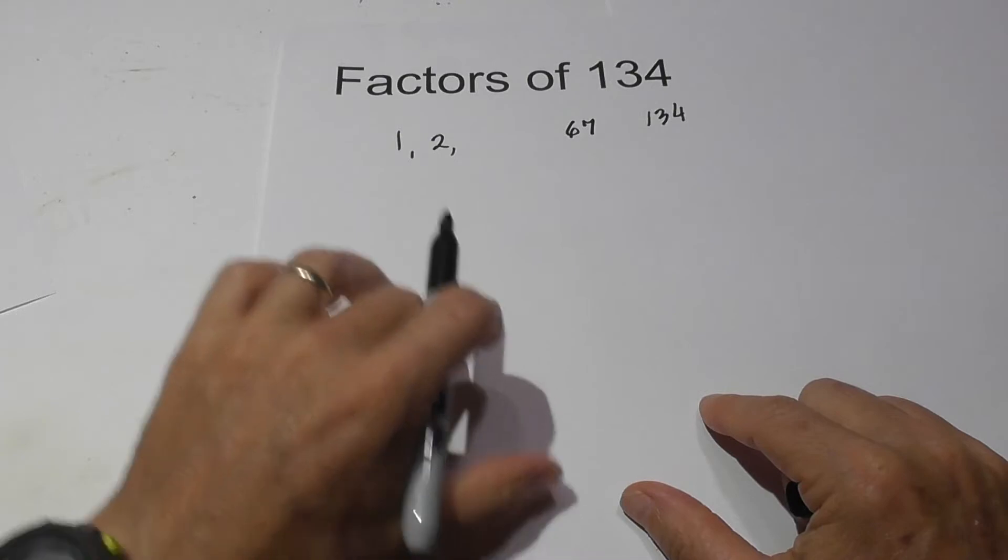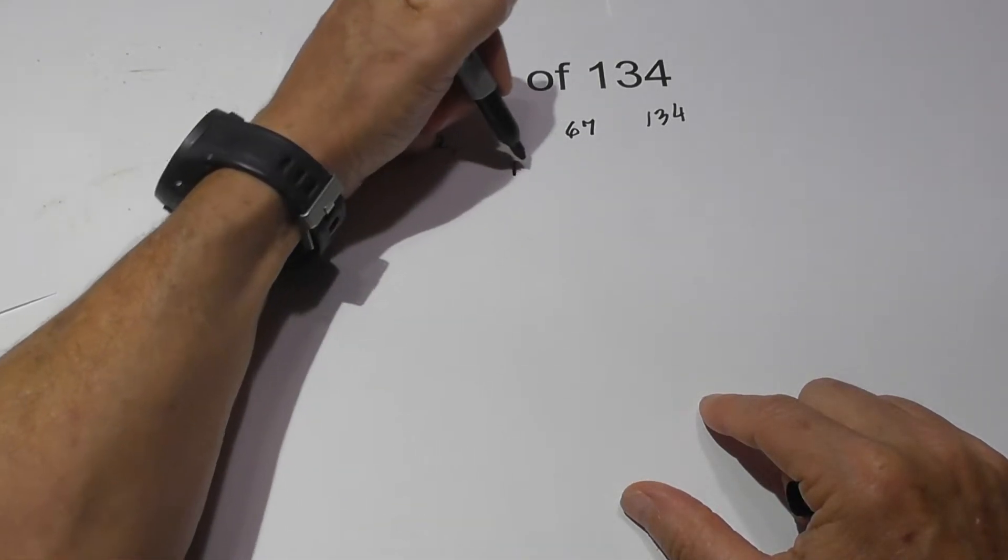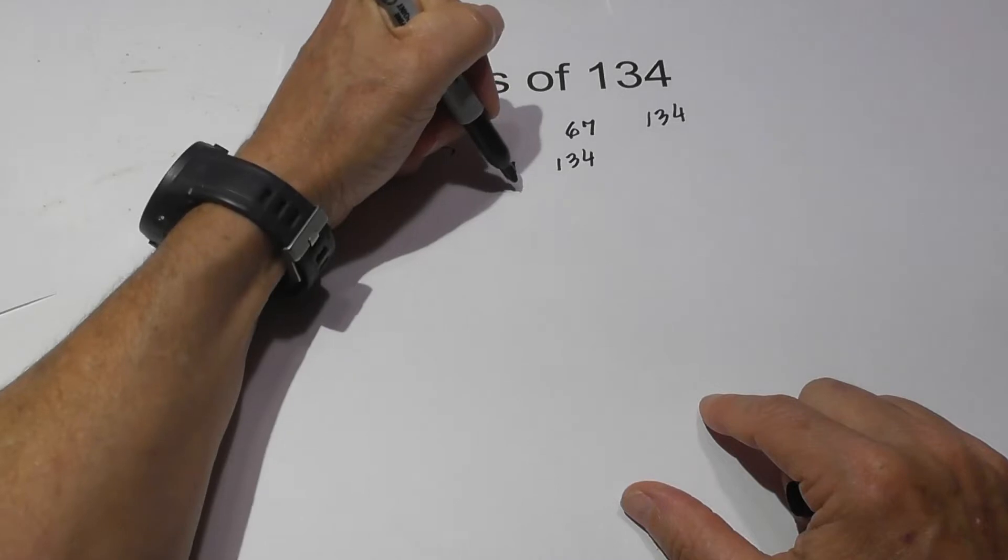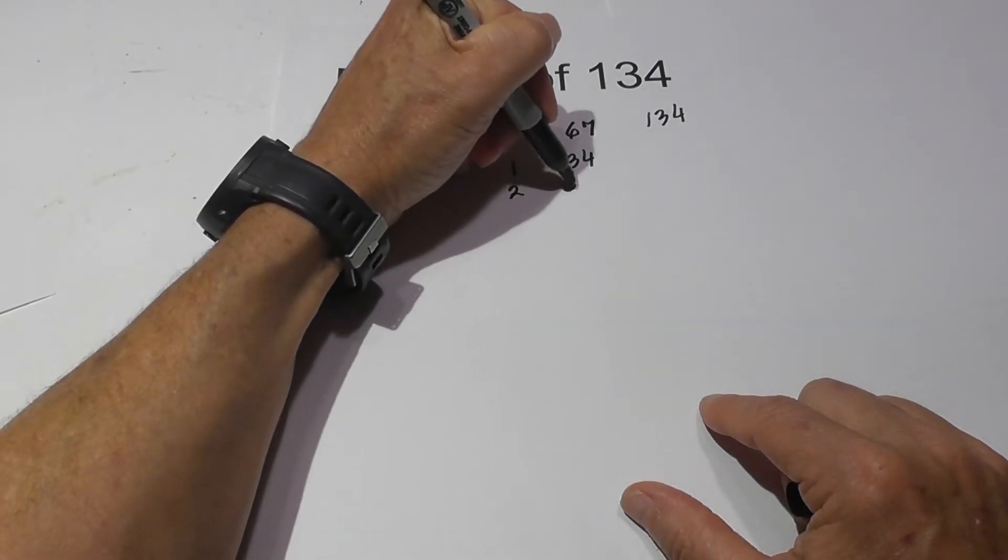And that's the factors. In pairs they are 1 and 134 and 2 and 67.